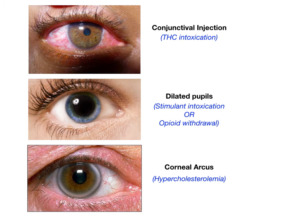The second image shows dilated pupils. A dilated pupil can be due to stimulant intoxication or use of a sympathomimetic agent, or it can be due to opioid withdrawal. As a general rule of thumb, any withdrawal state is the opposite of the intoxicated state. So if in opioid intoxication you get pinpoint pupils, then in opioid withdrawal you get the opposite — dilated pupils.